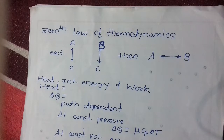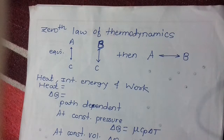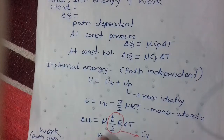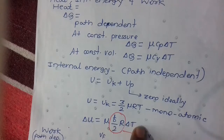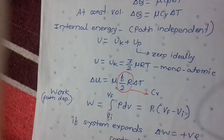Heat, internal energy, and work done are related by: ΔQ = ΔU + W. To calculate internal energy, the formula is always μCᵥΔT. For work done, the formula is the integration of PdV.